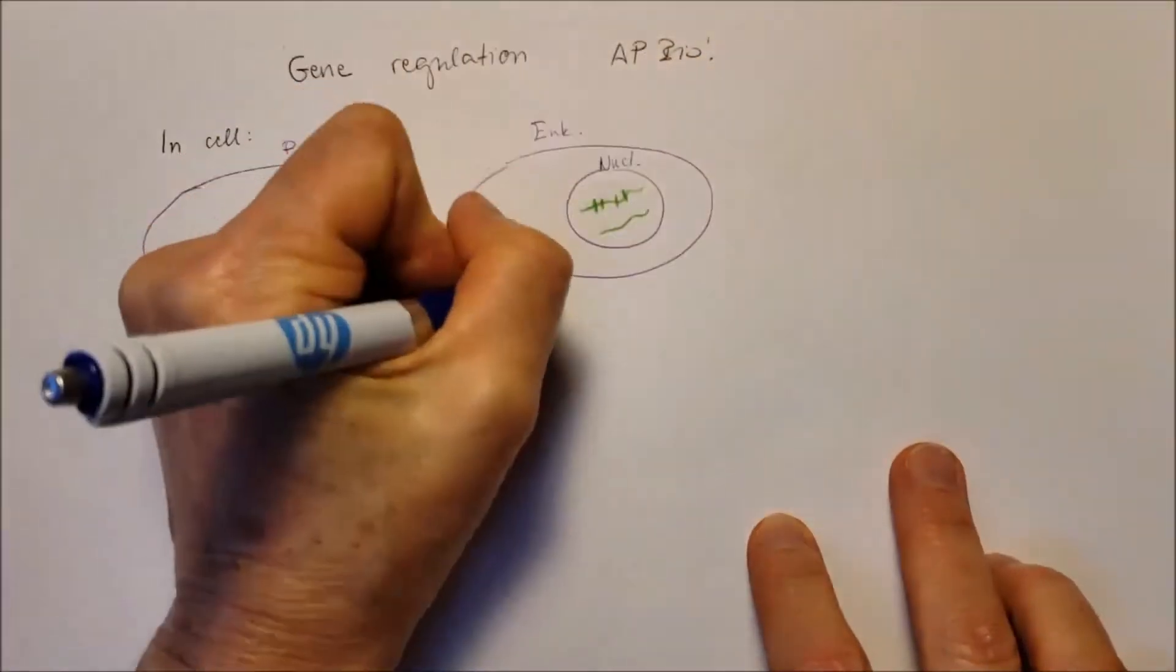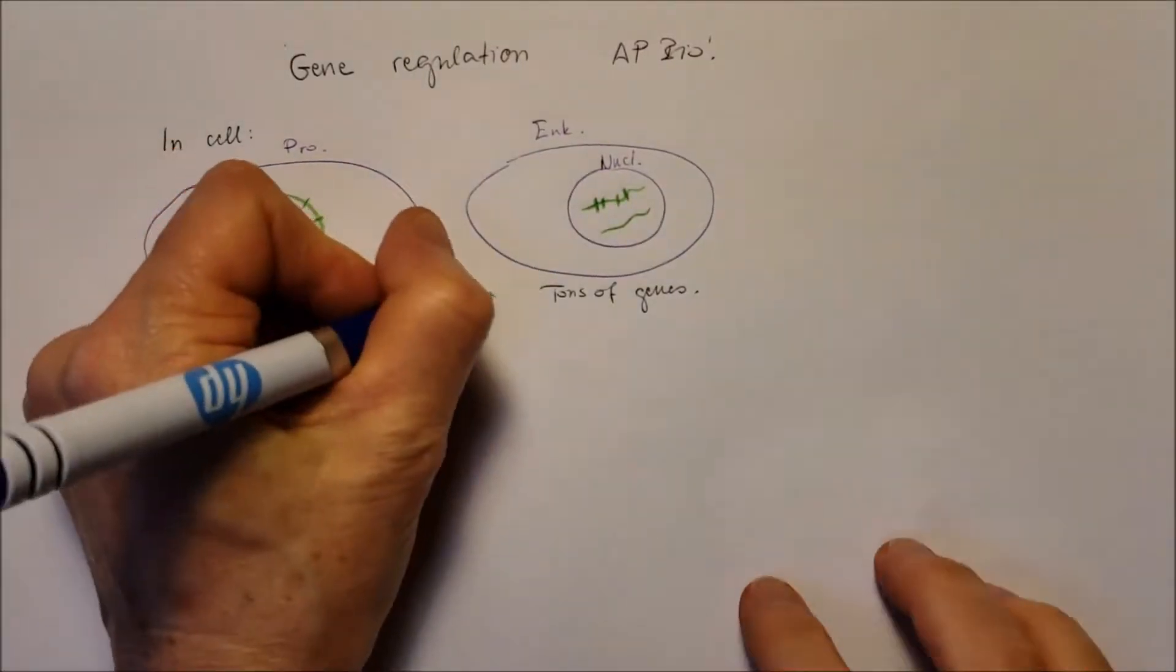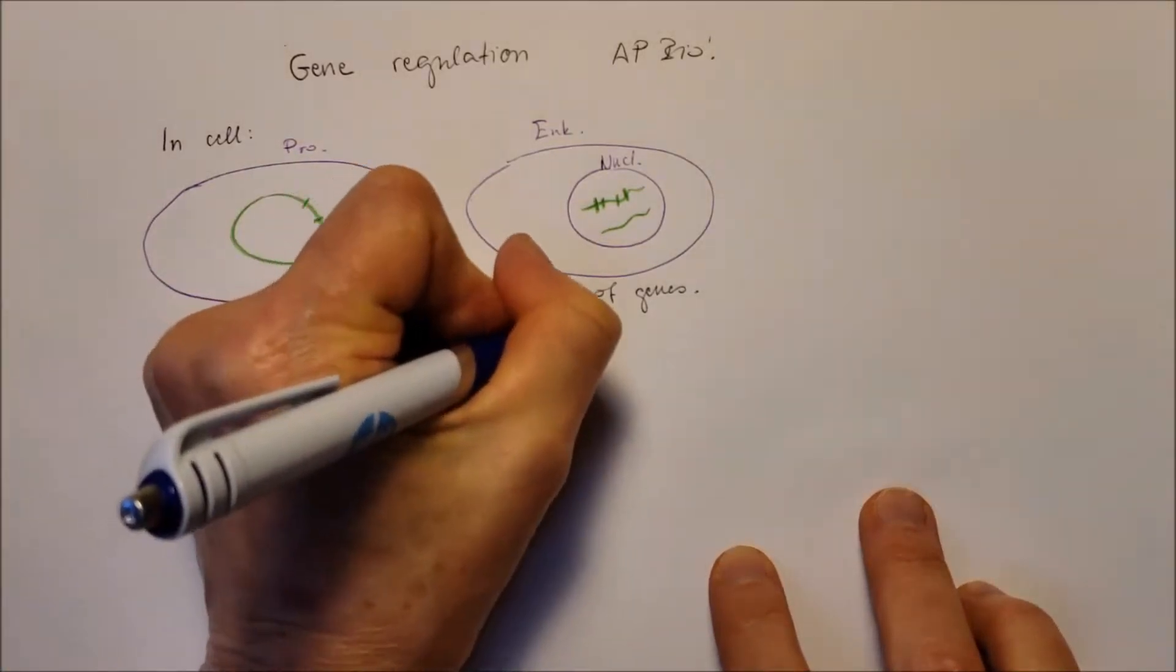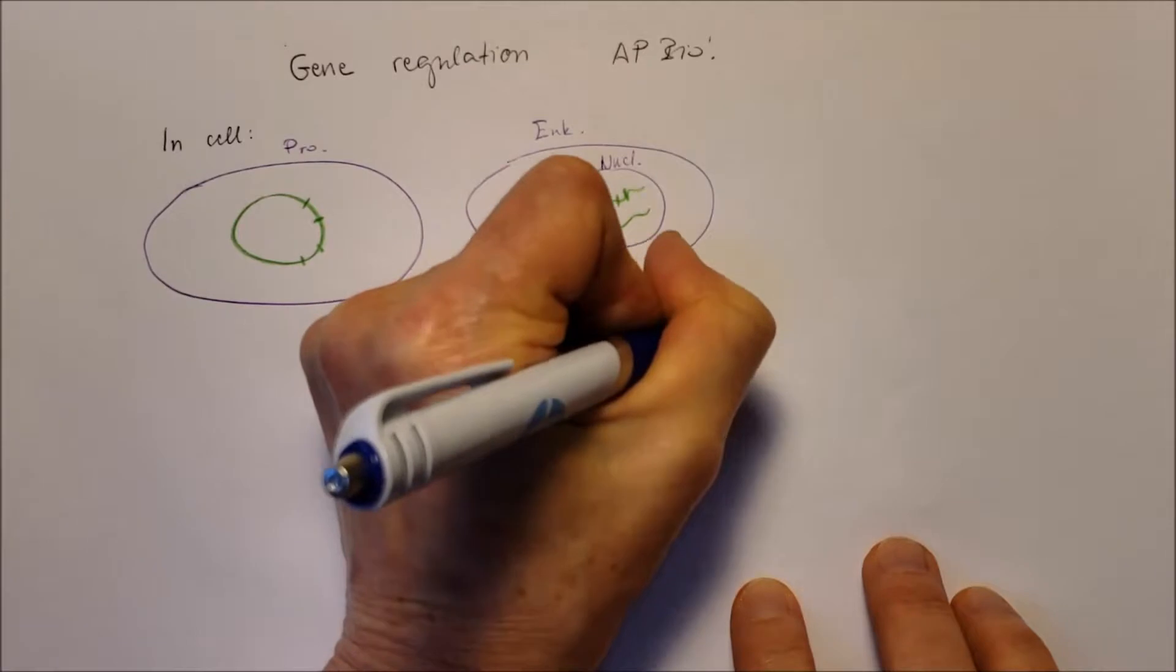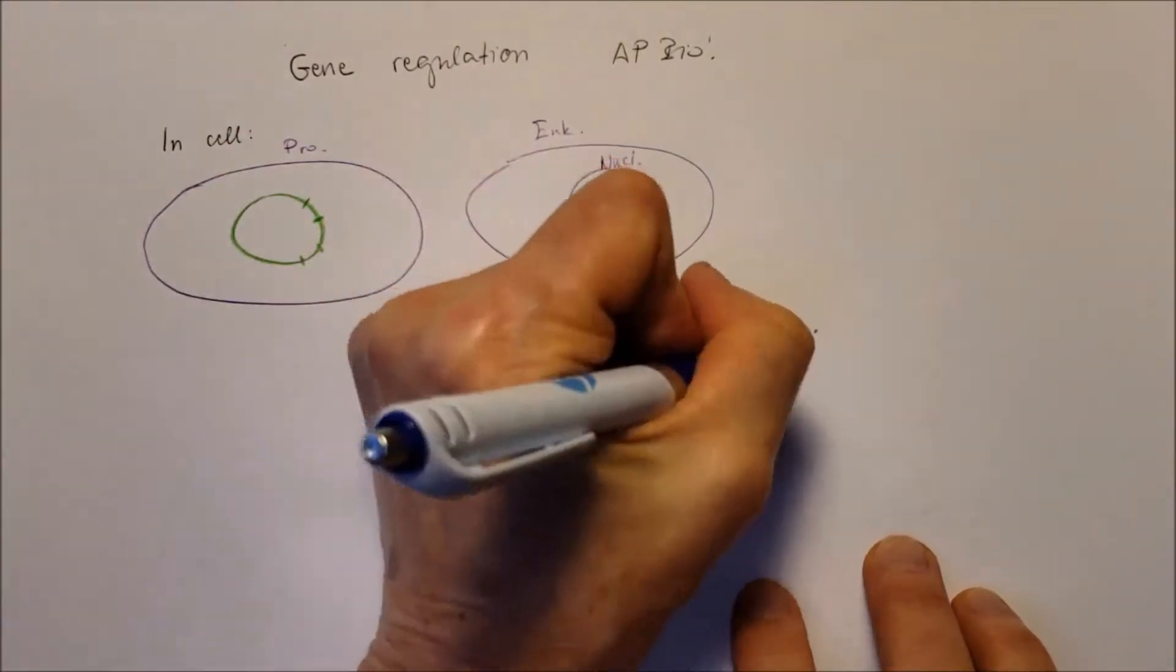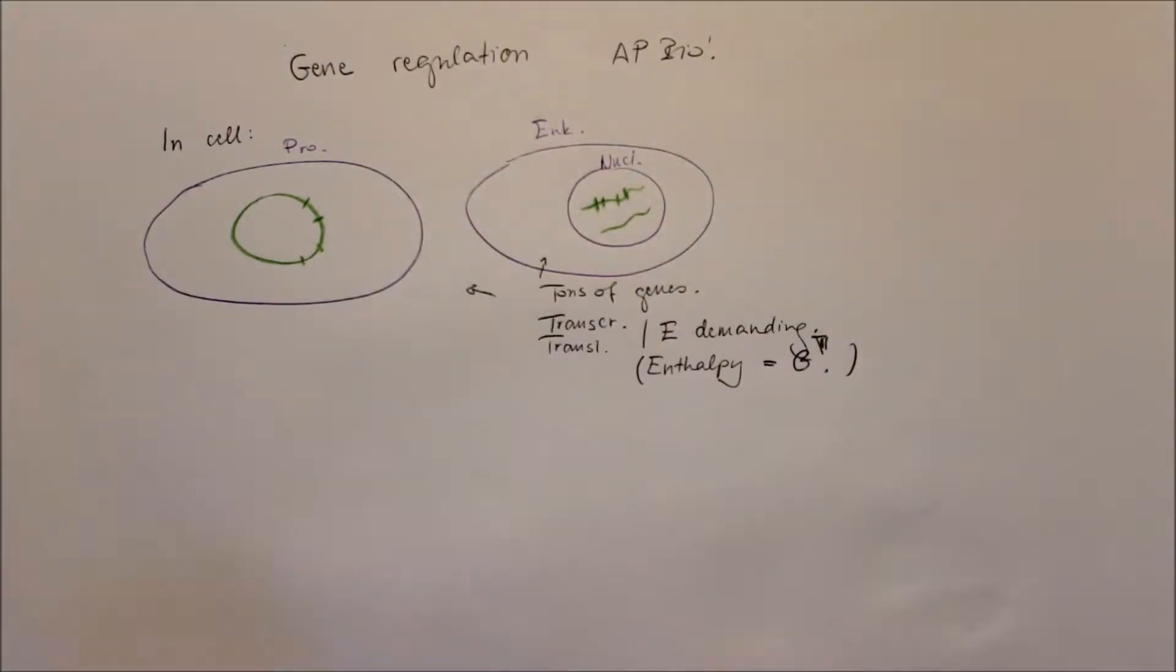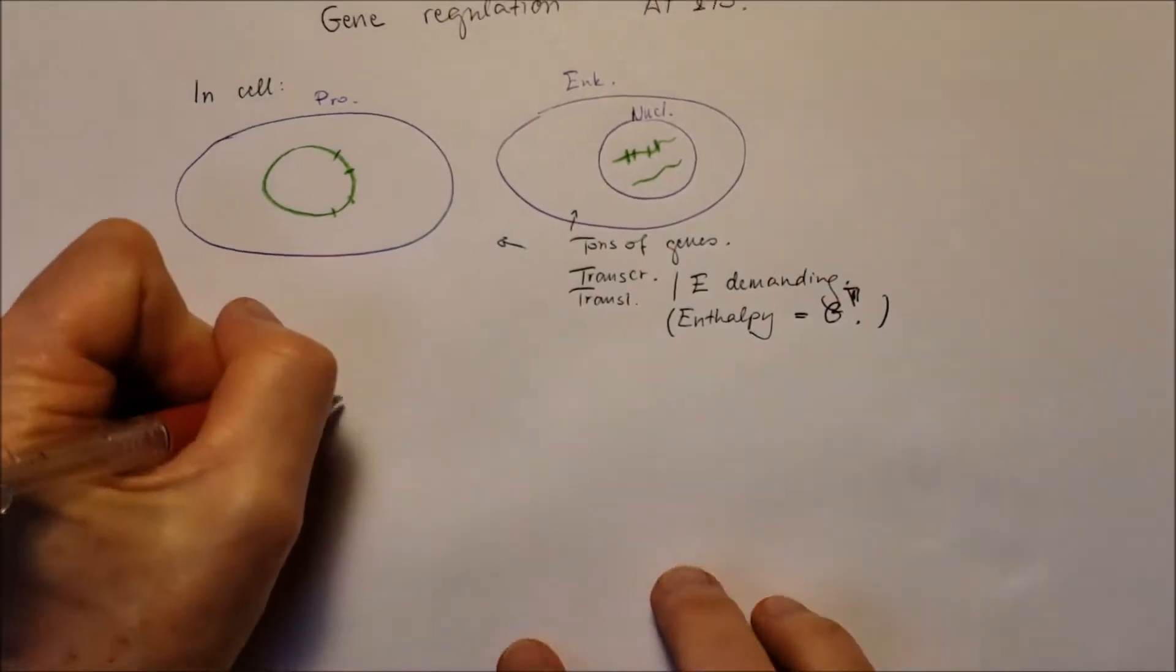In the DNA there are tons of genes and transcription and translation of all of the genes would be really time consuming and energy dependent. Increase the enthalpy of the molecules would require tons of free energy. So how does the cell decide which gene is going to be expressed and which not?